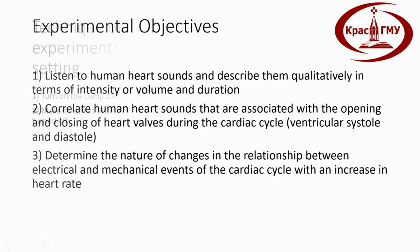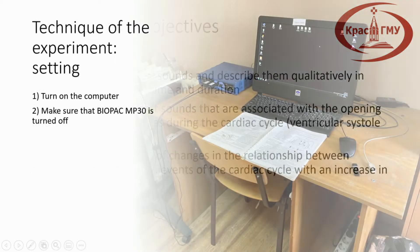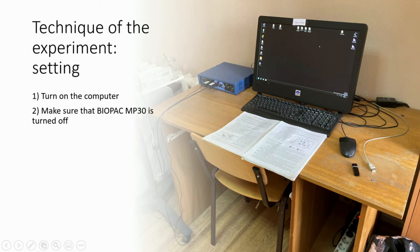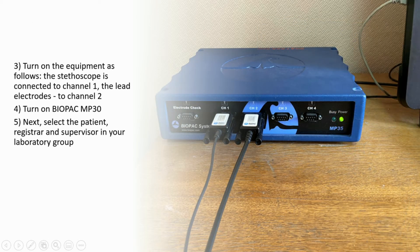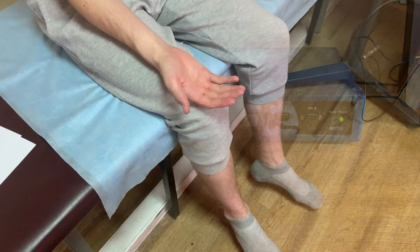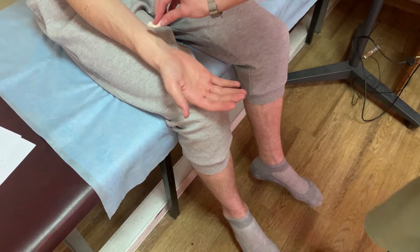Technique of the experiment — equipment setup: Turn on the computer. Make sure that Biopack MP30 is turned off. Turn on the equipment as follows: the stethoscope is connected to channel 1, and the lead electrodes to channel 2. Turn on Biopack MP30. Next, select the patient, registrar, and supervisor in your laboratory group. Place three electrodes on the patient.